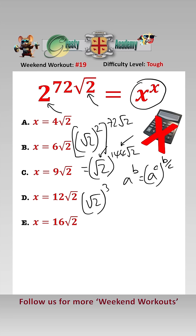That gives us root 2 cubed to the power of 48 root 2, which equals 2 root 2 to the power of 48 root 2.